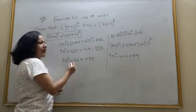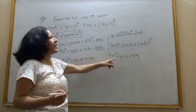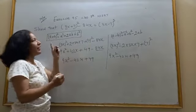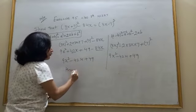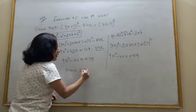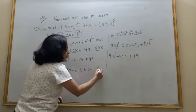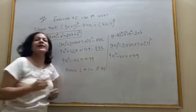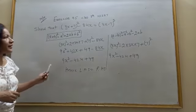So left hand side is also here, right hand side is also here. We solved both. Hence, we have proved that both are equal. Left hand side is equal to right hand side. Clear?